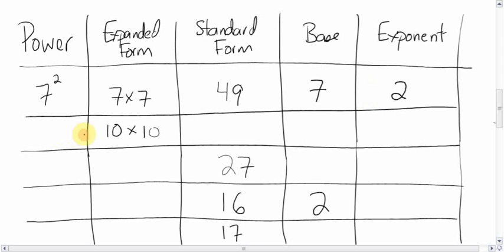Let's fill in what's left behind here. We're told it's 10 times 10. So the power must be 10 squared, and the exponent is going to be 2. So from there, obviously, we can figure out what the base is. The base is the big number, 10. And the exponent is 2. And then what is 10 times 10? It's 100.